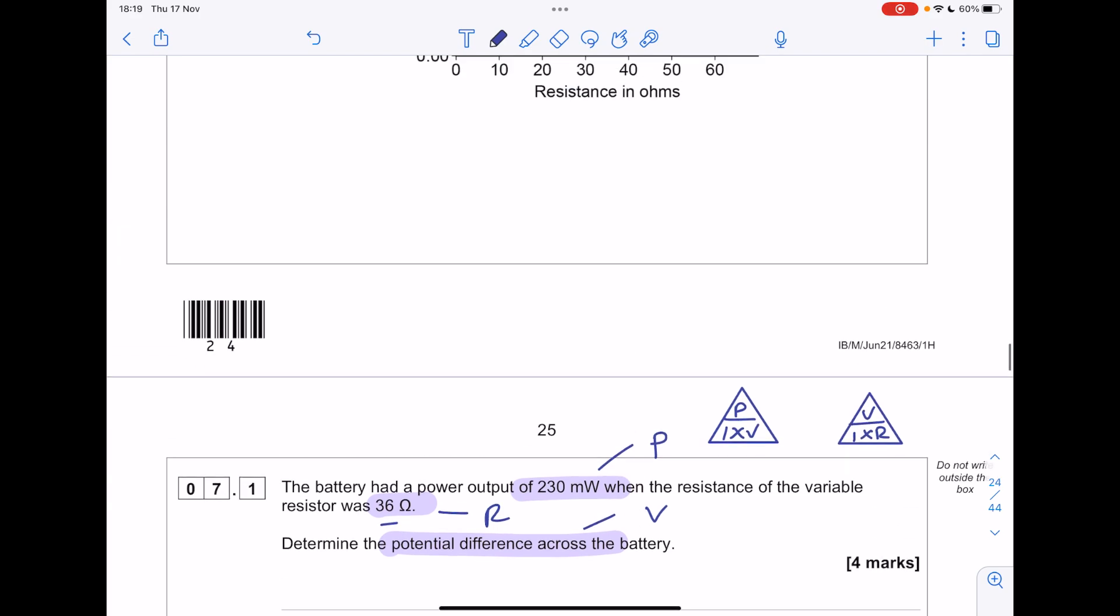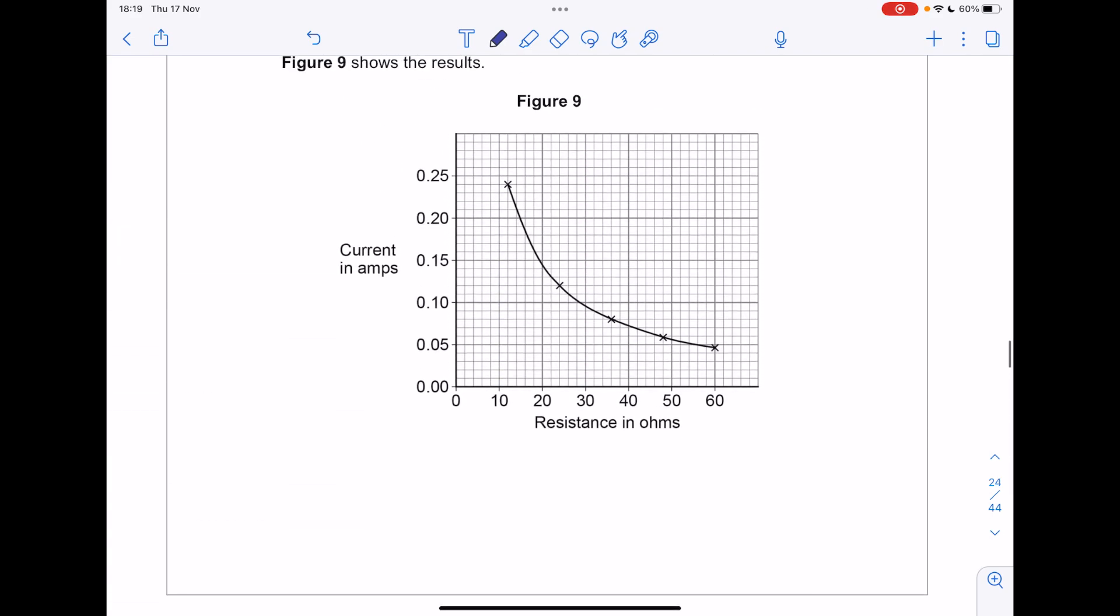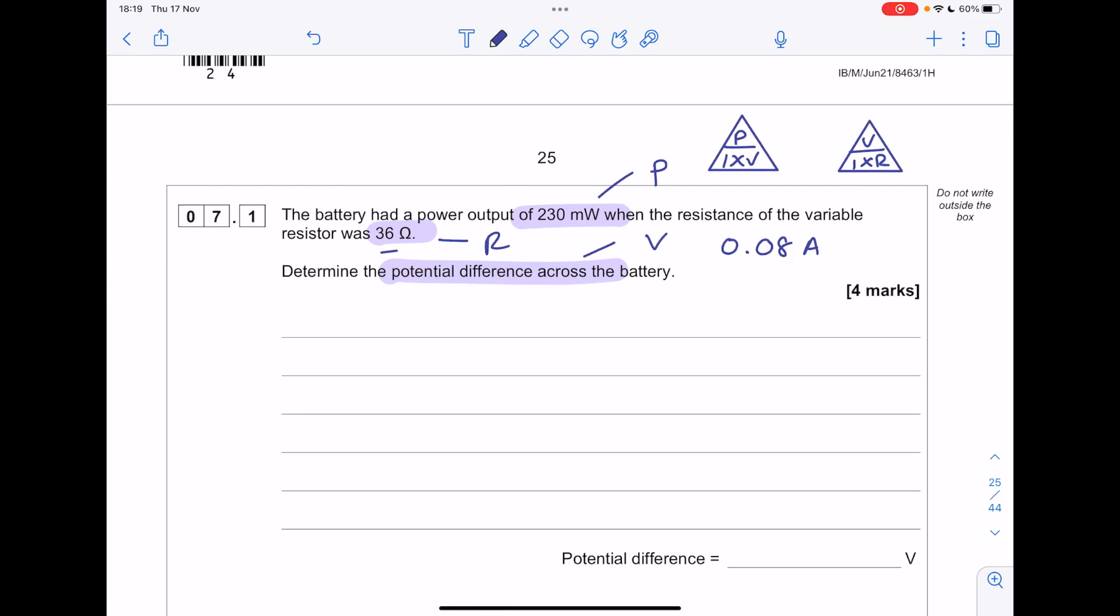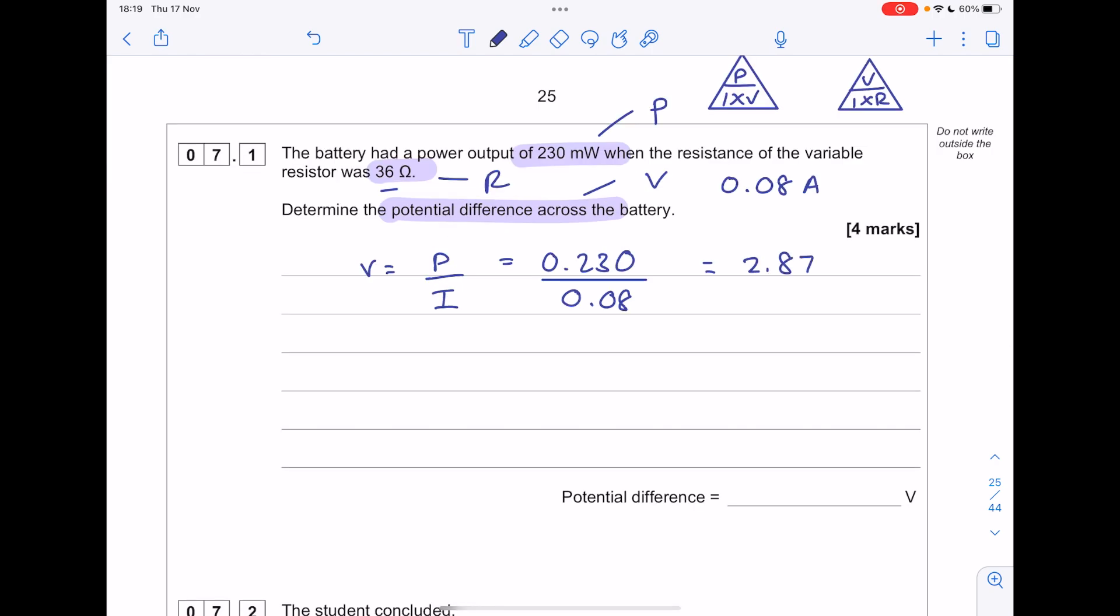We're going to need to find the current. The way we can do that is by using the graph. So let's look up 36 here. We can see our current value is 0.08. Actually now we're ready to go. We are after potential difference V, which is P over I. Our power is 230 milliwatts. Let's divide that by 1000 to get it into watts. Then divide it by that current value we just found. To get 2.875.